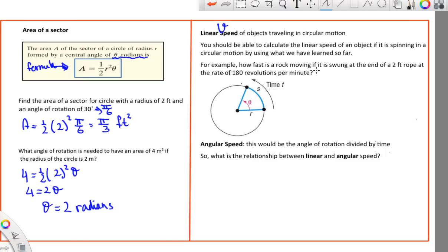For example, how fast is a rock moving if it is swung at the end of a 2 foot rope at a rate of 180 revolutions per minute? So it goes around 180 times in a minute. Well, I know that speed is the distance divided by the time. If we're going to do 180 revolutions per minute, then let's say the time we're using is 1 minute. So I just need to find out the distance. I can find that distance. The distance in one revolution would be exactly 2 pi times the radius.